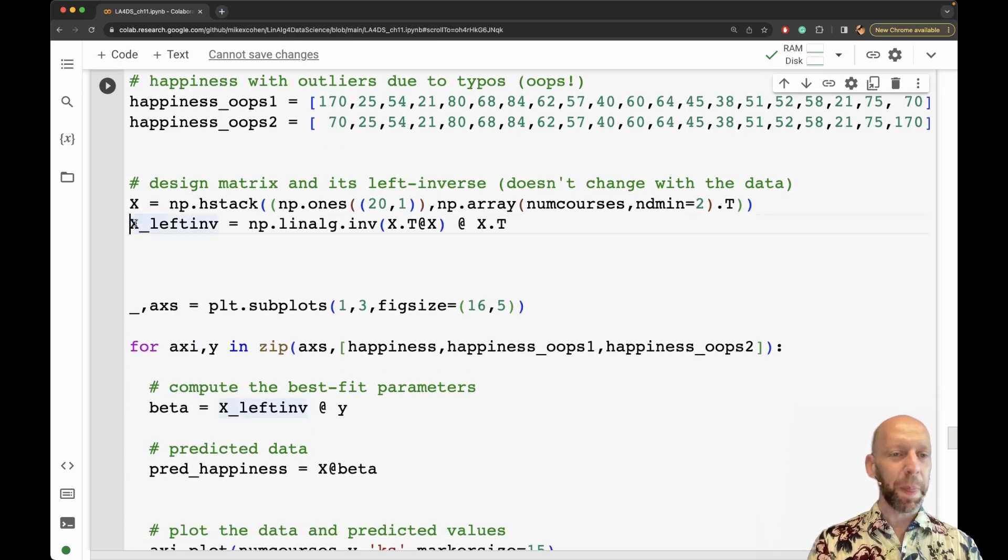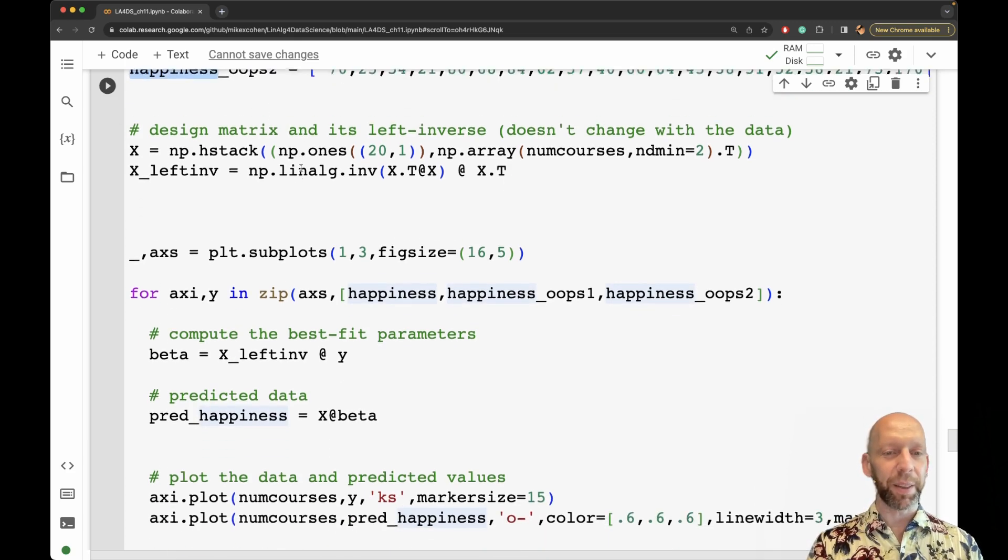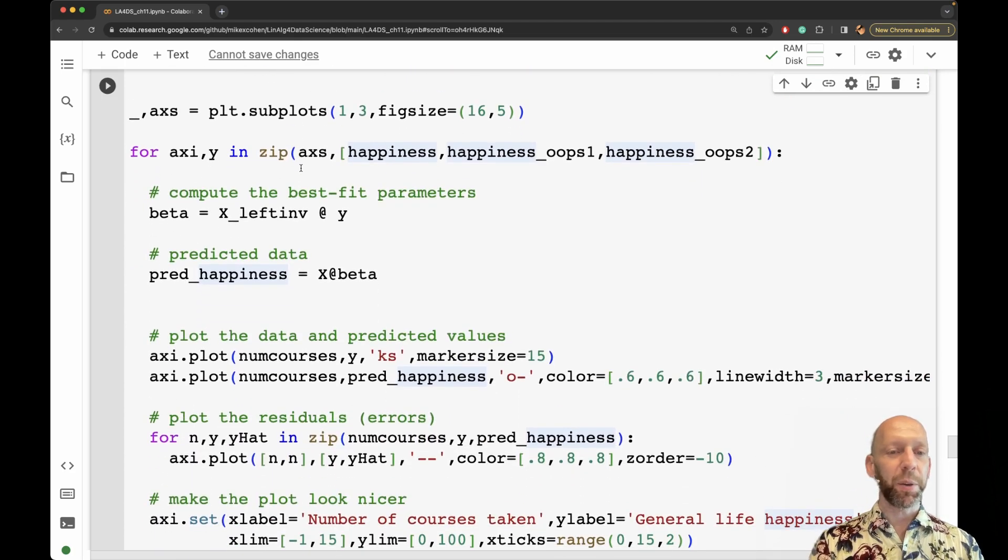Let's see here, I'm pre-computing the left inverse of x, because the design matrix x, because that doesn't change for these three different variables, these three different y vectors. So the original data, and then these two versions of the data with outliers introduced. Here to do the computations and the plotting, I'm using zip. So I have a for loop that goes over the three different axes that's in here, and these three different data sets. So the original data set, and then oops one and oops two.